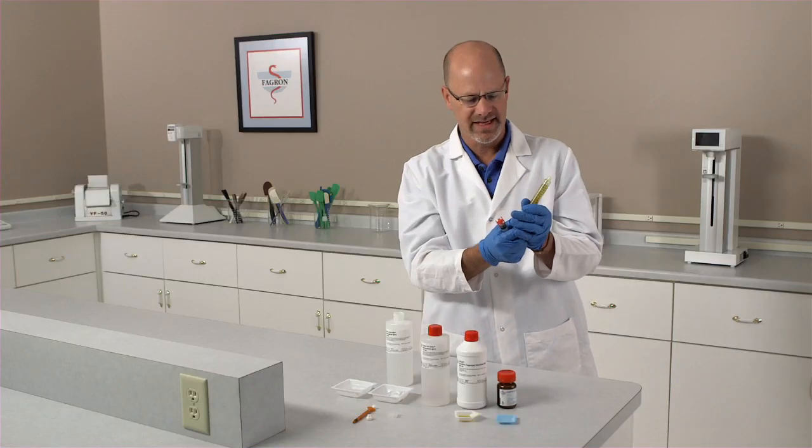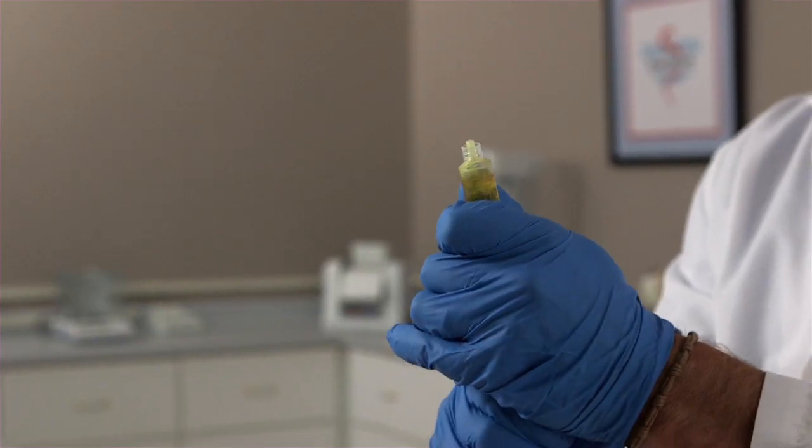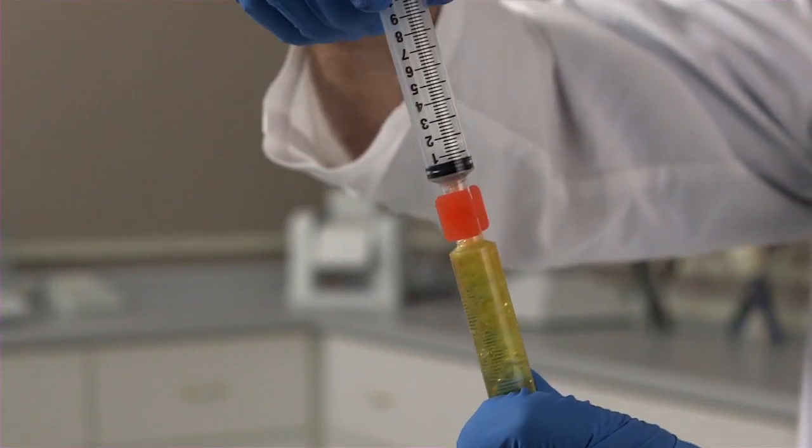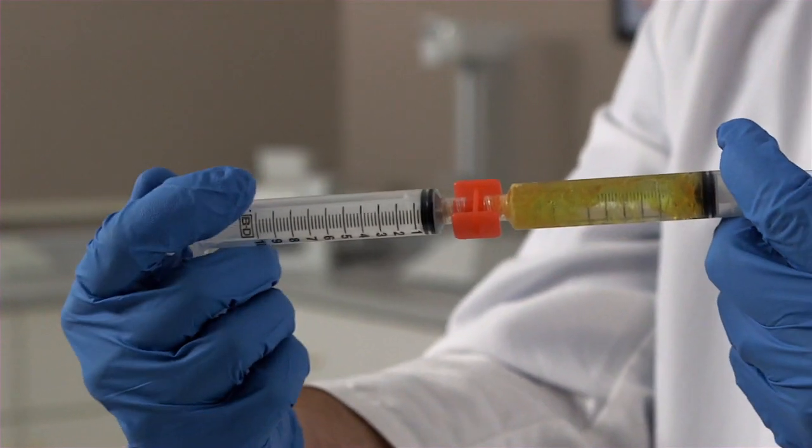We have to break the seal that is on the plunger. Then we can gently connect the two syringes back together. Now we can start our mixing process.